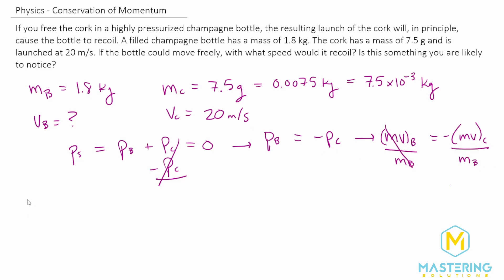And that gives us the velocity of the bottle is equal to the negative mass times the velocity of the cork divided by the mass of the bottle, which could also be expressed this way. The mass of the cork divided by the mass of the bottle multiplied by the velocity of the cork.